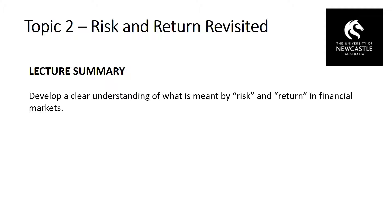Equally, an investor who adopts a mean-variance utility function will treat extreme downside events as having the same effect on utility as extreme upside events. Therefore, when thinking about risk we need to move beyond simply looking at variance and consider alternative measures of risk. That is where alternative theories of utility come into play.